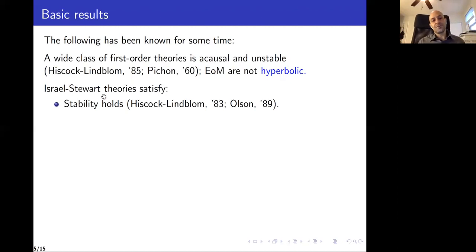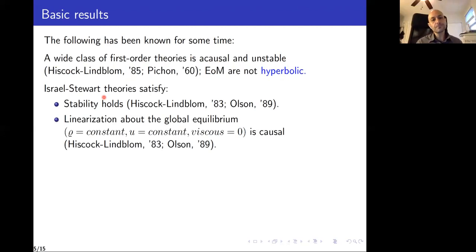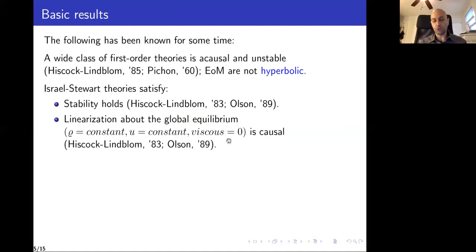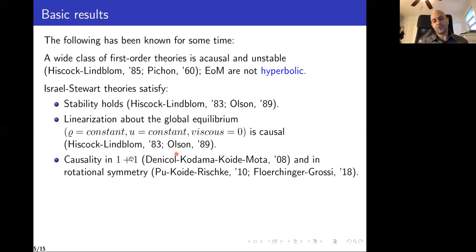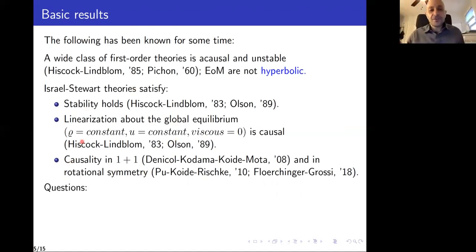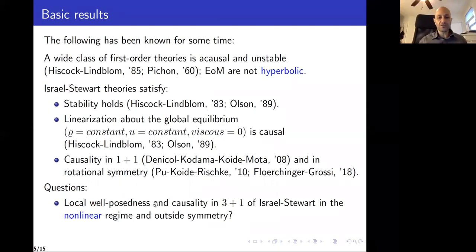For Israel-Stewart, some good things happen. We know the theory is stable, and if you look at the linearization about global equilibrium — states where density and velocity are constant and viscous fluxes vanish — the linearized evolution is known to be causal. Causality has been proven in 1+1 dimensions and in rotational symmetry. But this leaves open some questions: what about local well-posedness for the Israel-Stewart equations and causality in 3+1 dimensions — meaning the full nonlinear theory outside symmetry classes?